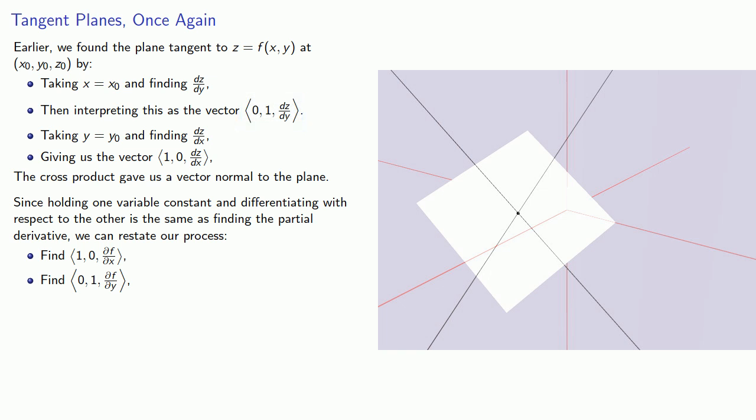And again, since these are the direction vectors for two tangent lines, the cross product will give us a vector normal to the plane.